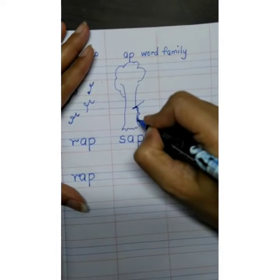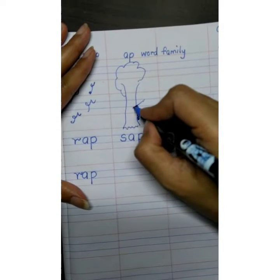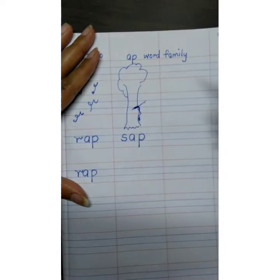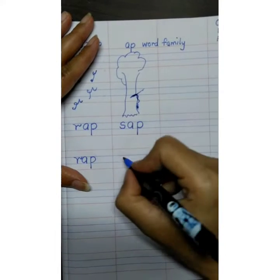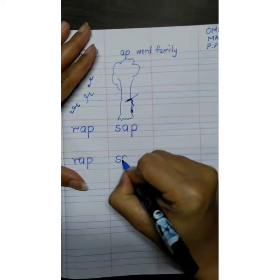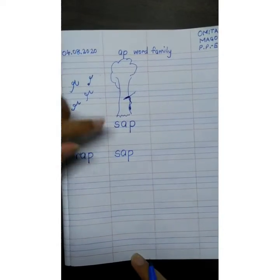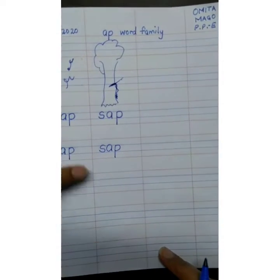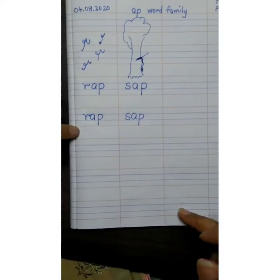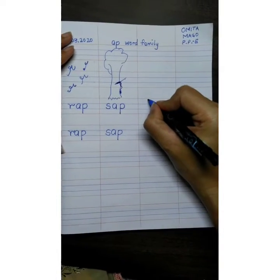What do we call it? Sap. S, app, sap. You will write it in these columns also. S, app, sap. And the next word is...